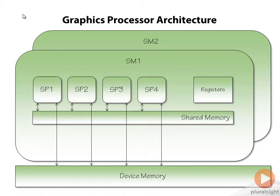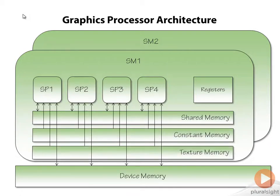There are also two special types of memory: constant memory and texture memory, that the processors can read from. We have a whole separate module on the different memory types, but we'll get to grips with device and shared memory as we start writing actual code in the next module.